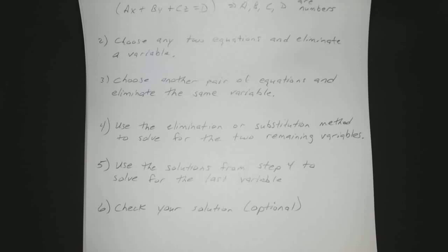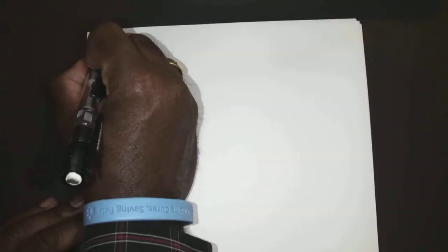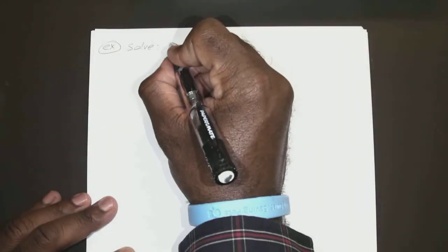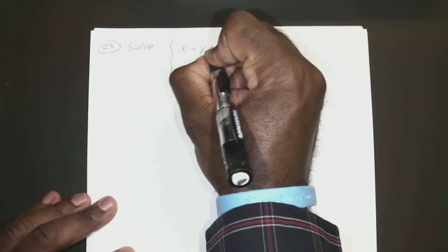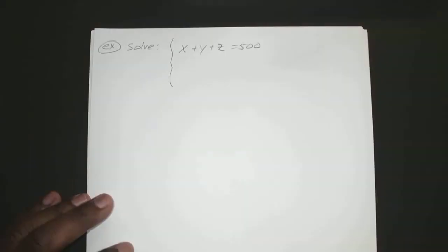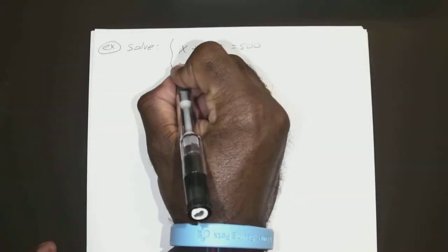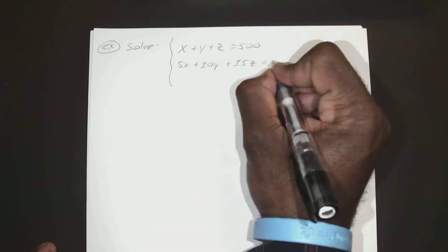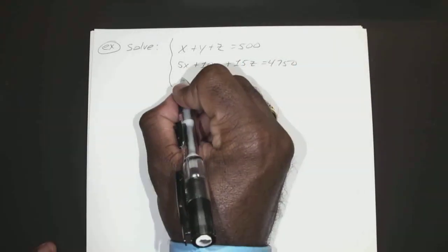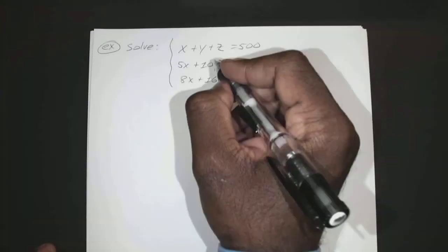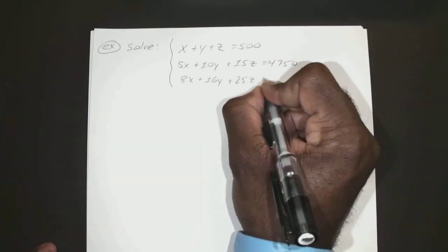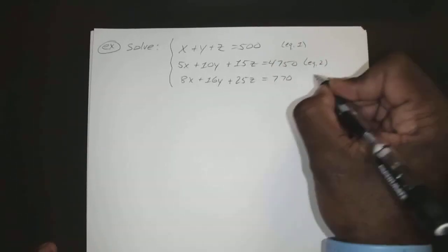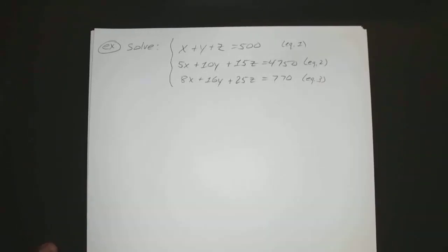Let's say for our first example, if you want to solve: X plus Y plus Z equals 500 — that's equation one. Five X plus 10Y plus 15Z equals 4,750 — equation two. And 8X plus 16Y plus 25Z equals 7,700 — equation three.